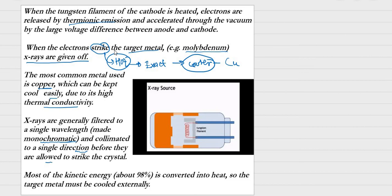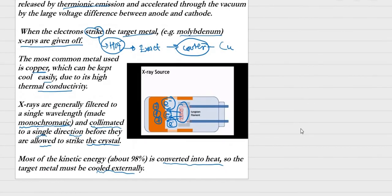The X-rays are then filtered to a single wavelength — monochromatic X-rays — because a monochromatic beam is required for the experiment. They are also collimated to propagate in a single direction before being allowed to strike the crystal. Most kinetic energy is converted into heat, so the target metal must be cooled externally, which is why copper is preferred as the target material.